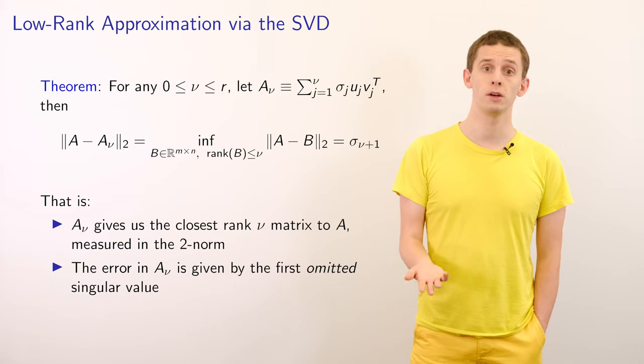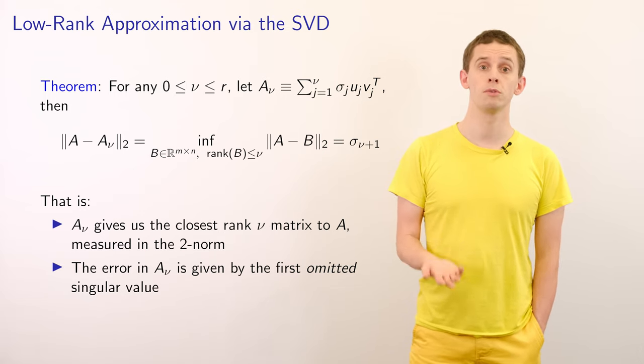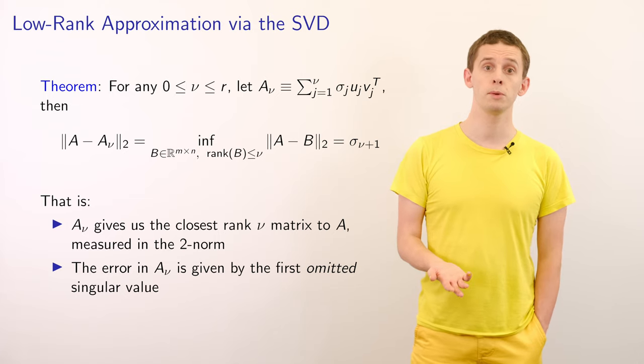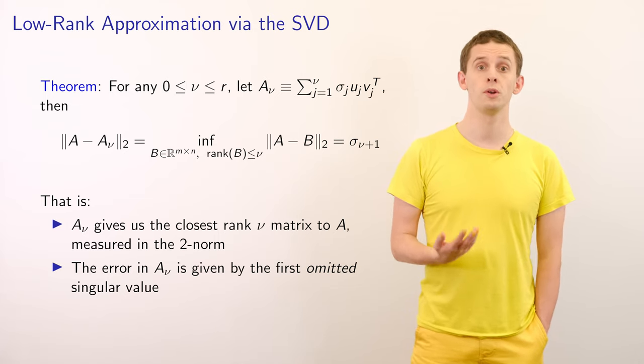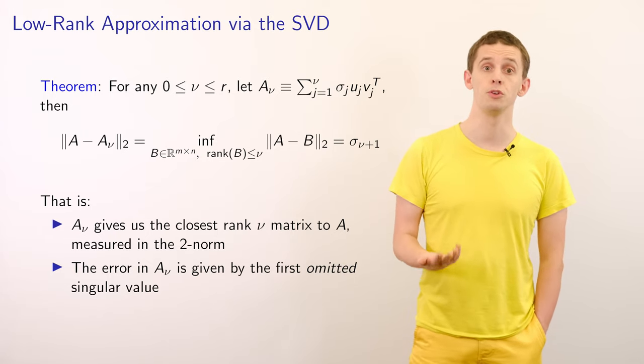Suppose that nu is between 0 and r. And let's define A subscript nu to be the sum from j equal 1 to nu of sigma j times uj times vj transpose. So in other words, we take our full sum that would go from j equal 1 to r and we truncate it after just nu terms.